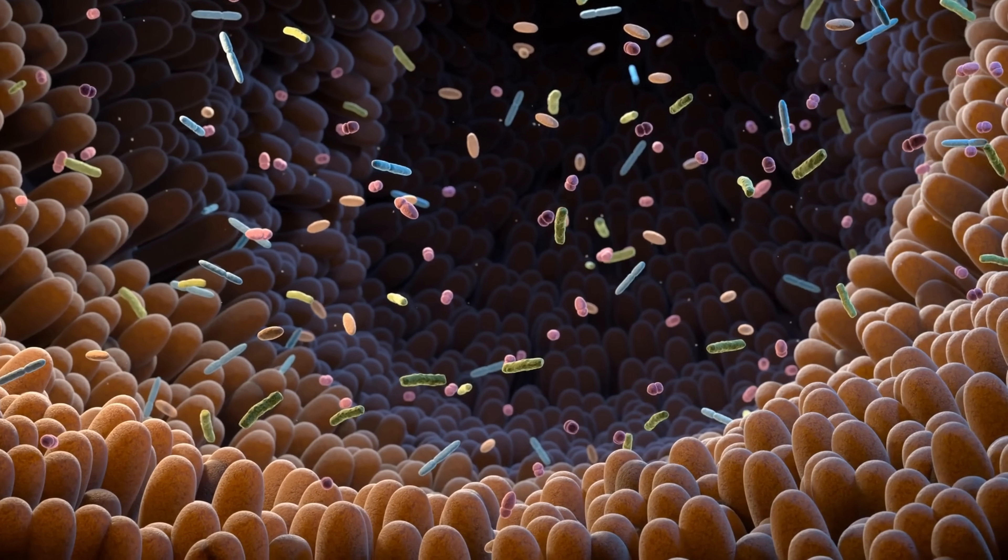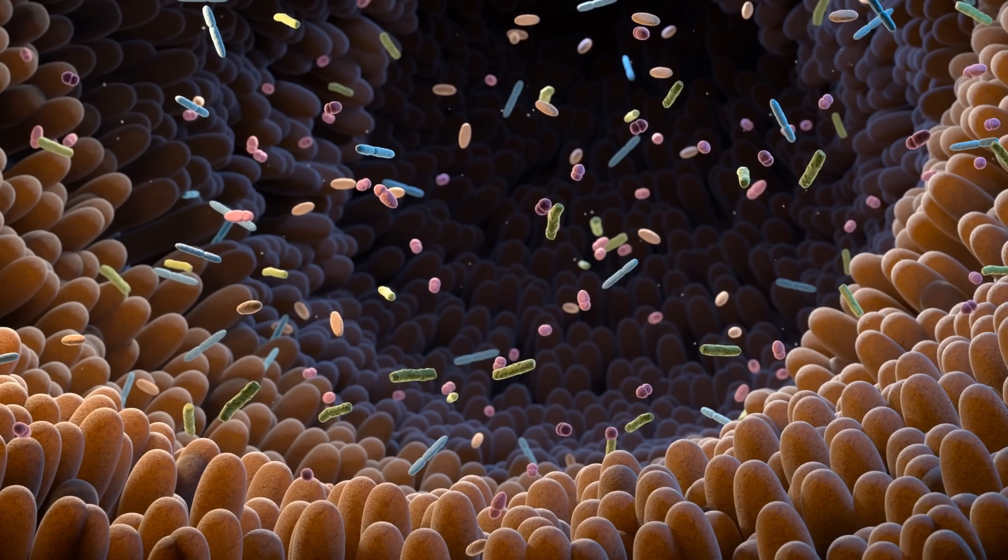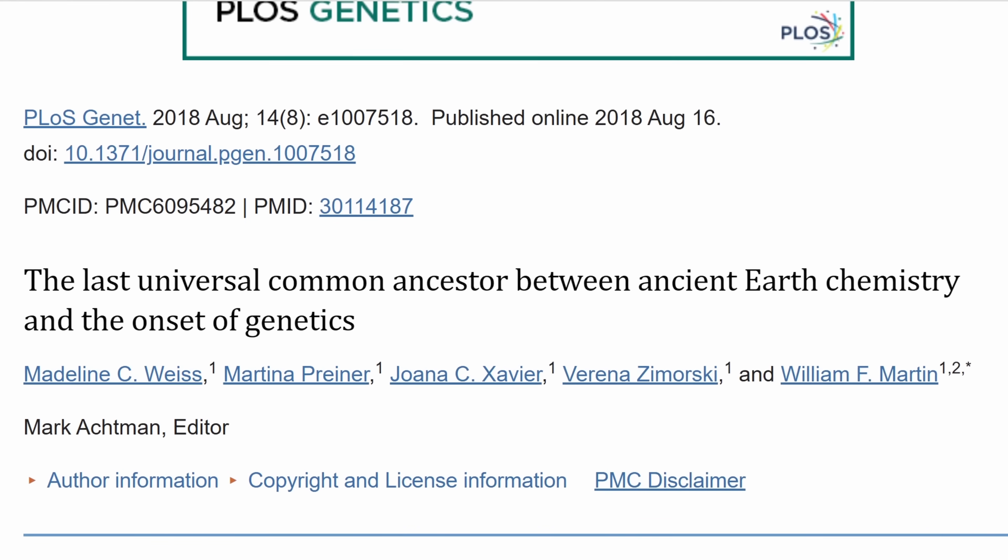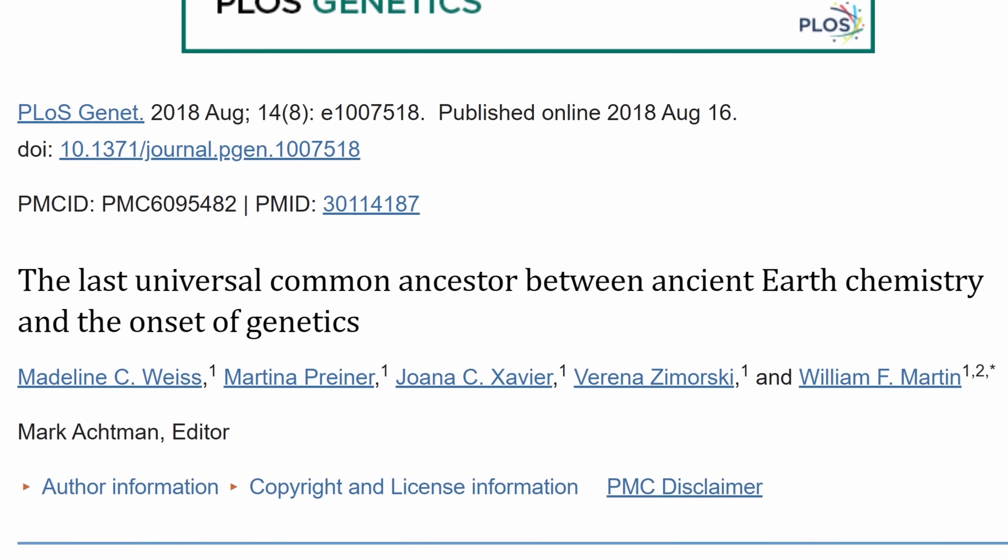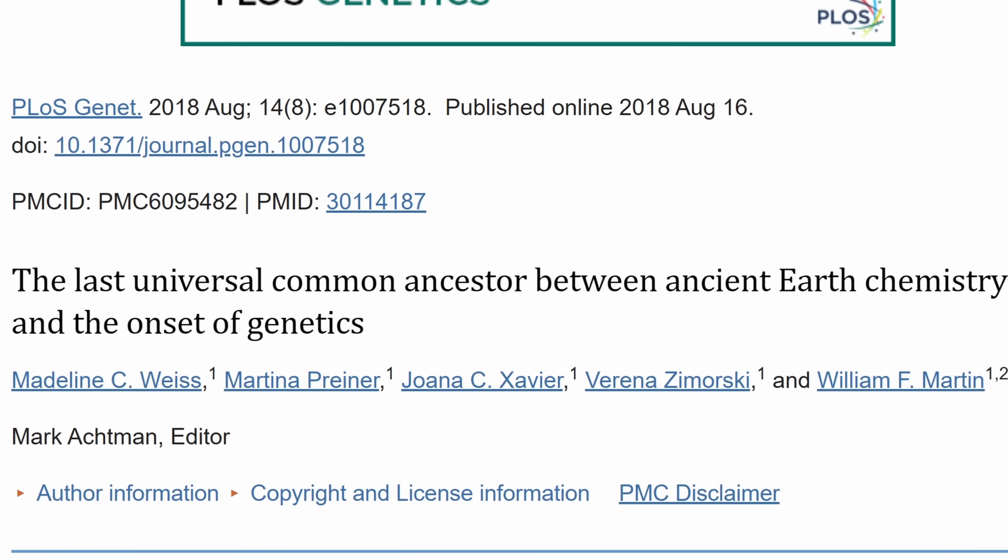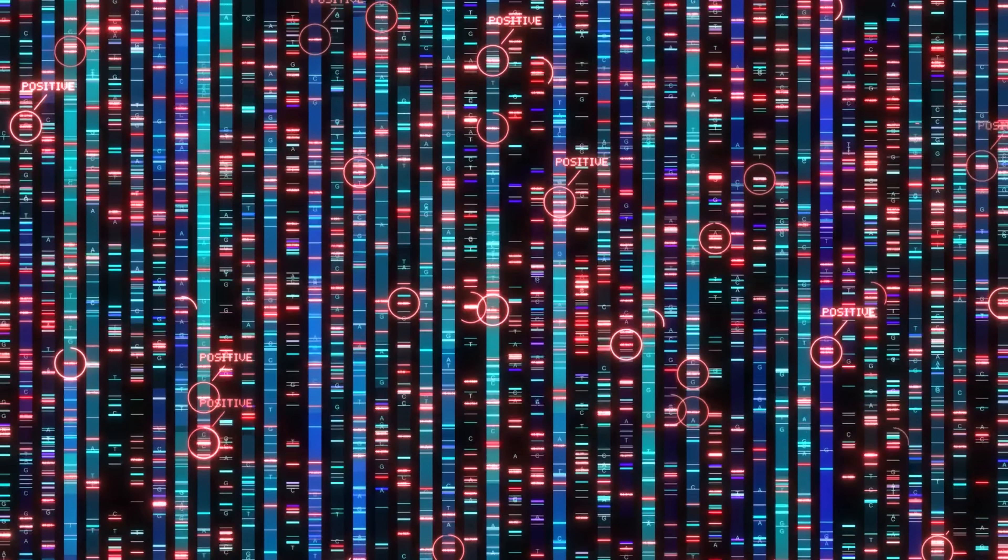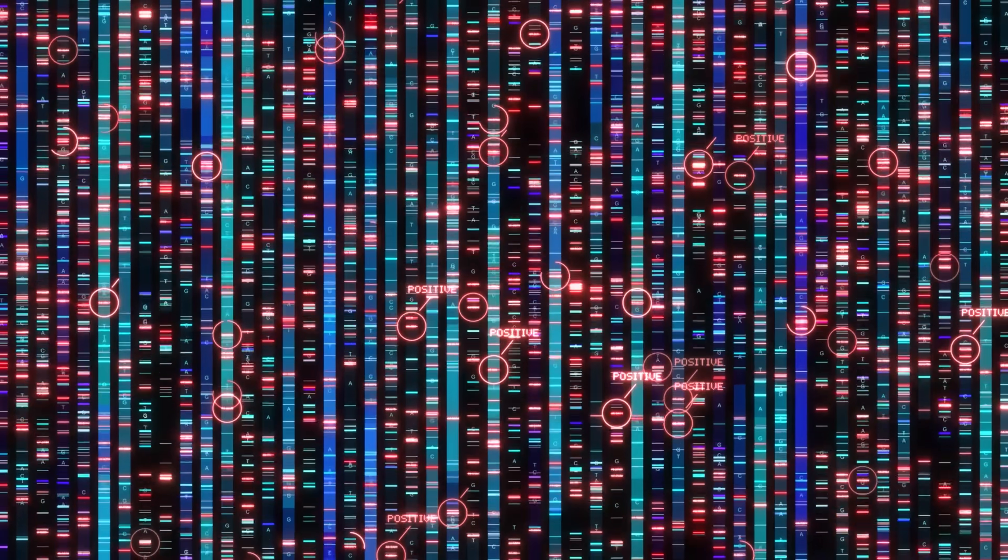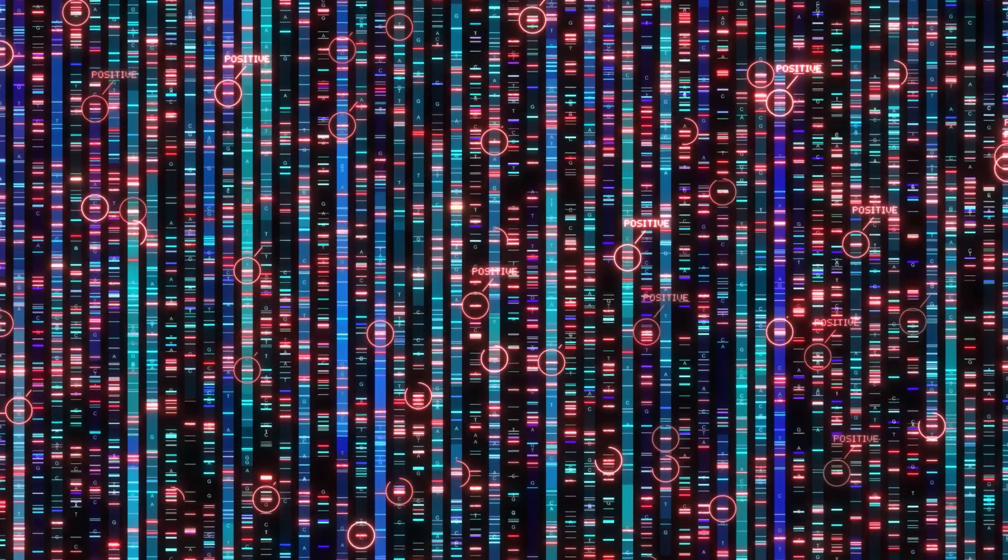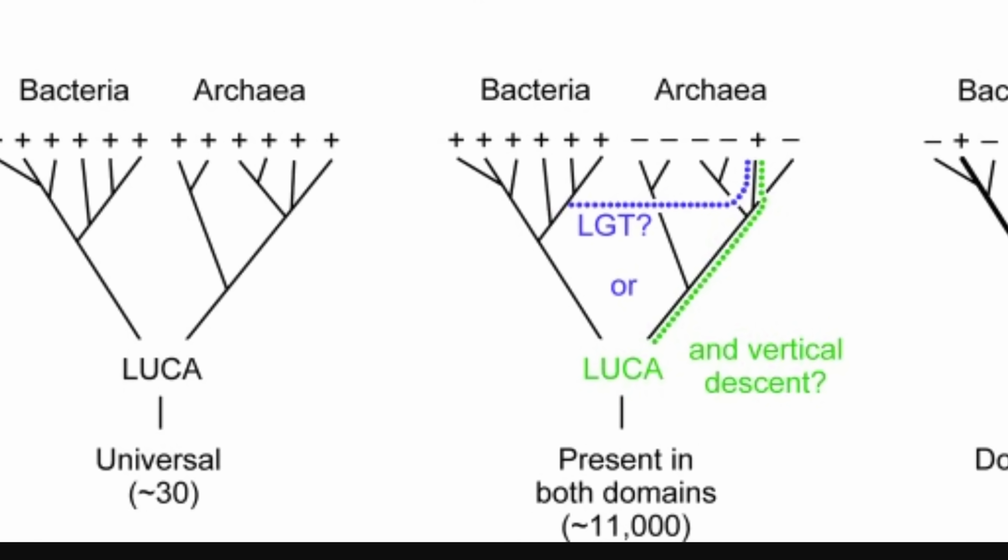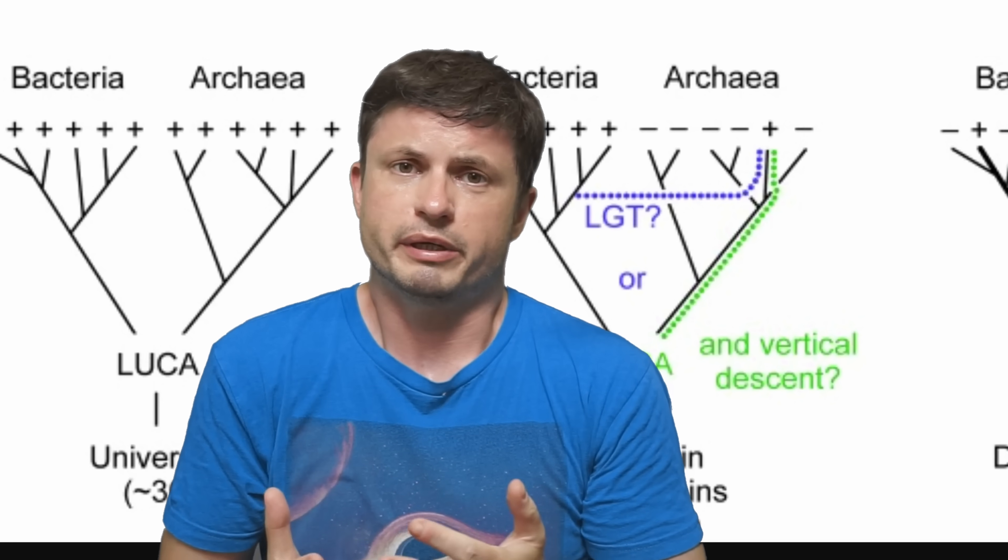And so over the past few decades several studies came out trying to figure out what this LUCA might have been like. Here's actually one of the older papers and I guess one of the more popular ones, you can find in the description. And so in a lot of previous studies scientists like Madeleine Weiss were able to analyze millions of different genes and hundreds of thousands of different protein clusters in order to figure out some of the potential genes that might have been in common and to then trace back their origin.